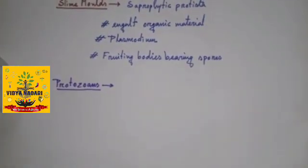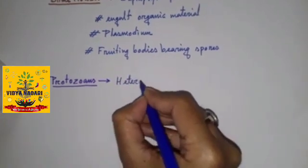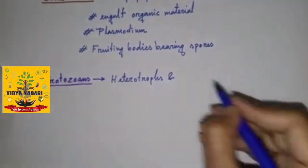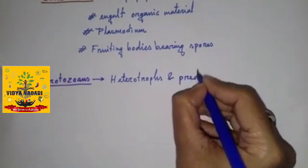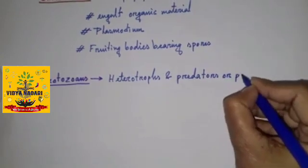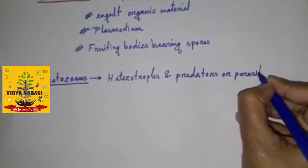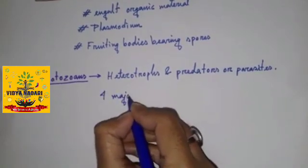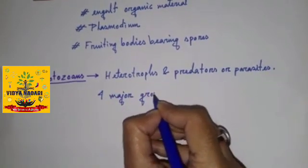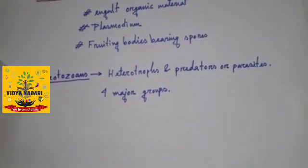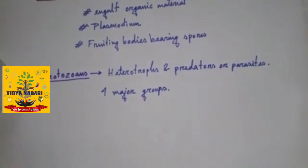Now protozoans. Protozoans are heterotrophs and live as predators or parasites. They are four major groups named as amoeboid protozoans, flagellated protozoans, ciliated protozoans, and sporozoans.